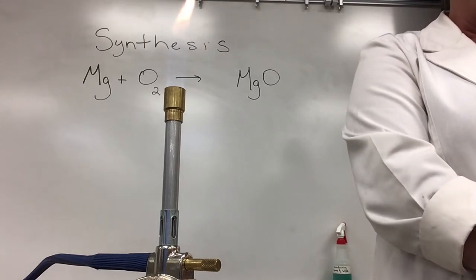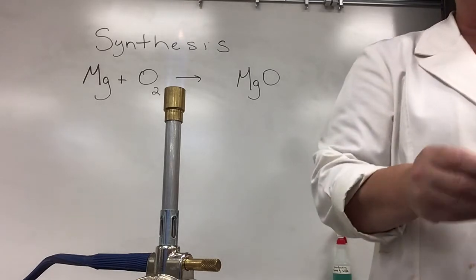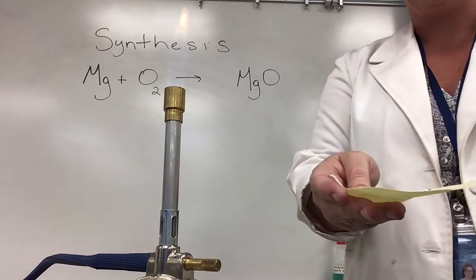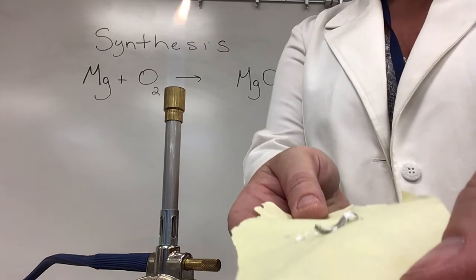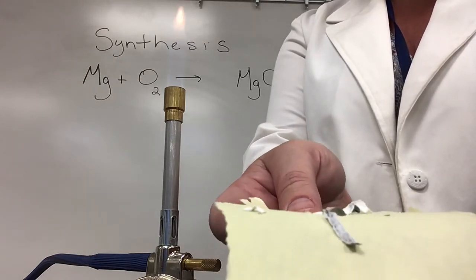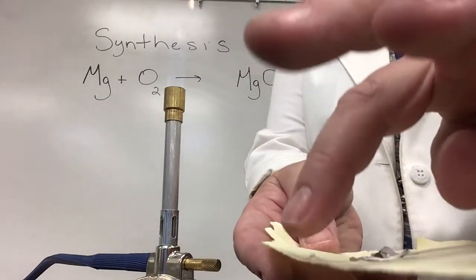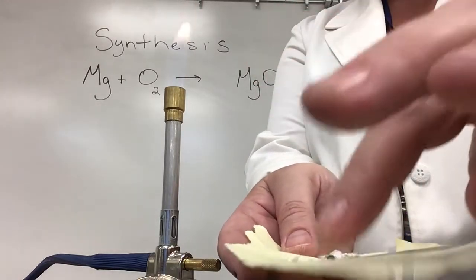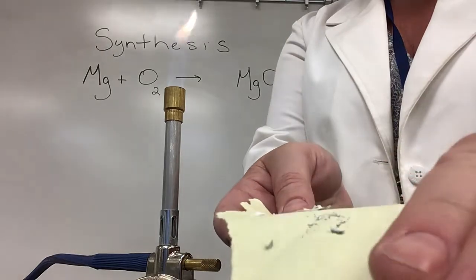This is the magnesium oxide as an ash and again instead of being that silvery color it's kind of grayish white and it's sort of chalky. It's no longer metallic in nature, it kind of just falls apart if I touch it.